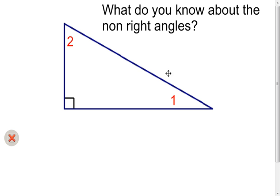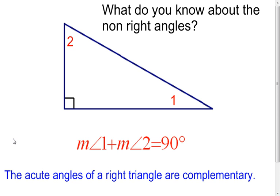Here's another corollary of the triangle angle sum theorem. What are we going to know about angle one and angle two in a right triangle? We already know that this is a right angle — all three angles have to add up to 180 degrees. Take out this 90-degree angle, and all we're left with is 90 degrees, which tells us that these two angles are going to have to add up to 90 degrees. If two angles have a sum of 90 degrees, they're complementary. This theorem tells us that the acute angles in a right triangle will always be complementary.